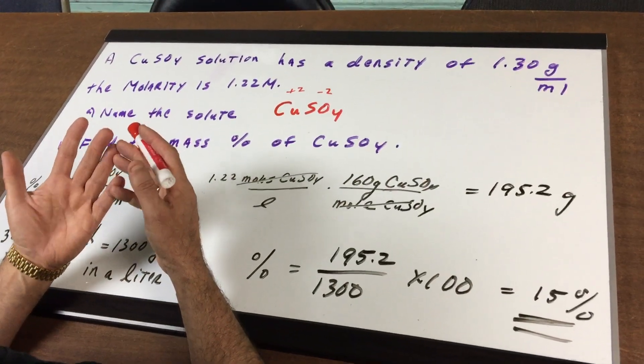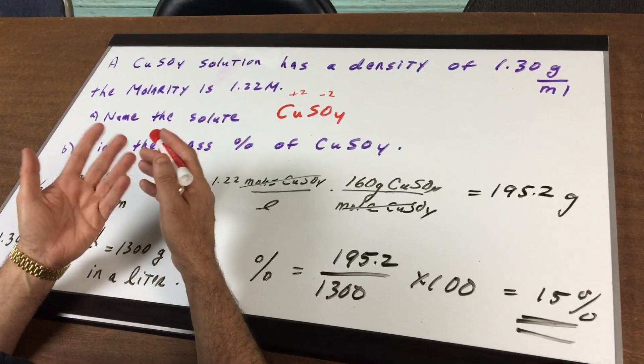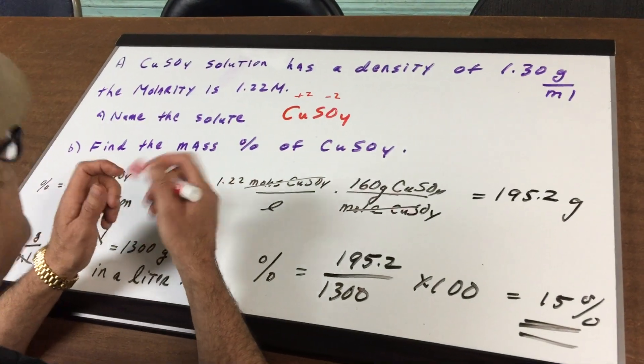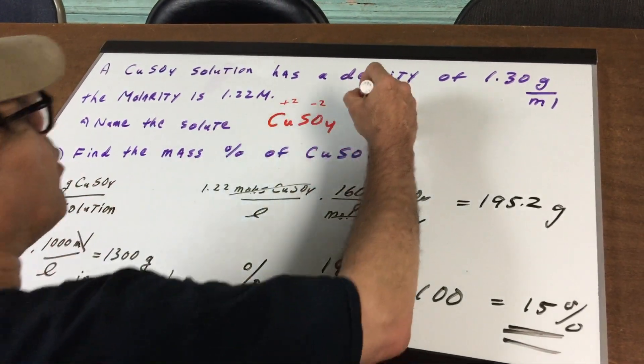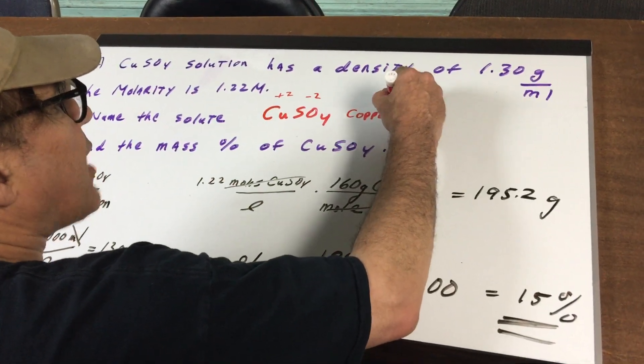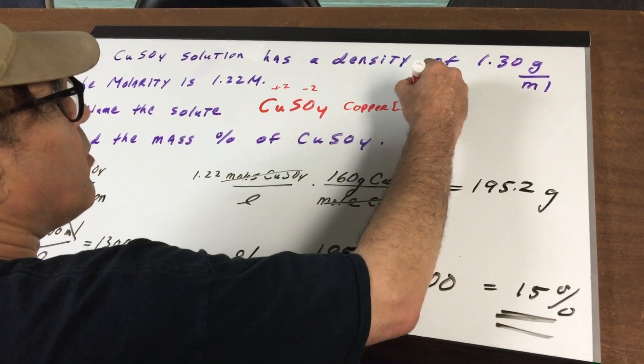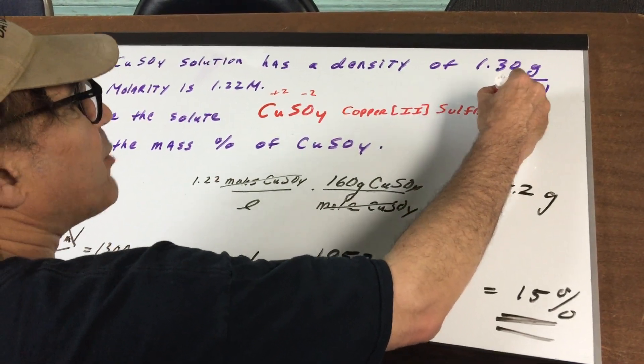For example, cobalt could be plus two or plus three. Manganese could be plus two, plus three, plus four, even plus seven. In this case, copper can either be plus one or, as you can see, plus two. So that's reflected in its name. I would call this copper, put Roman numeral two, sulfate. Copper two sulfate.